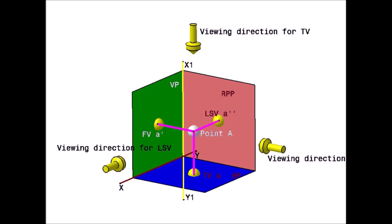Observe that in the first quadrant, the left side view is captured on the right profile plane, as the object is always kept between the observer and the plane of projection. The pink color lines that project the views of the point onto different planes are called projectors.